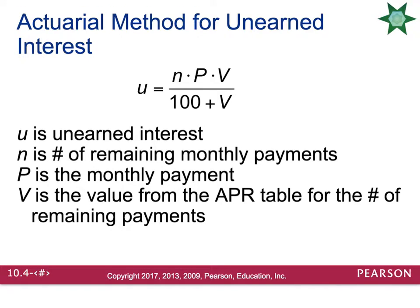To calculate your unearned interest using the actuarial method, you need to take N — the number of remaining monthly payments — times P — the amount of the monthly payment — times V — the value from the APR table for the number of remaining payments — and divide that by 100 plus V. This tells you how much unearned interest there is.